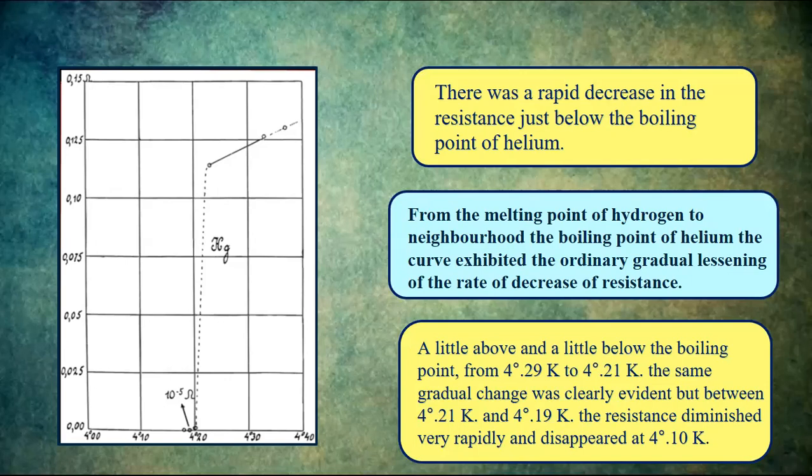A little above and little below the boiling point, from 4.29 Kelvin to 4.21 Kelvin, the same gradual change was clearly evident. But between 4.21 and 4.19, the resistance diminished very rapidly and disappeared at 4.10 Kelvin.